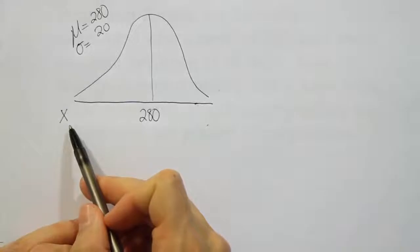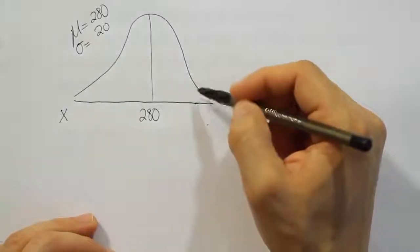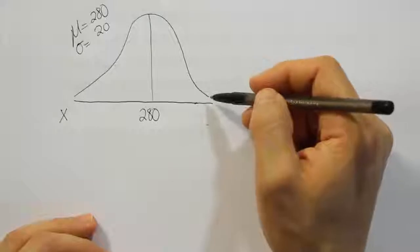This X represents a pregnancy length. And they say what's the pregnancy length that corresponds to the shortest 1% of pregnancies. Now if you think about over on this end, this would be the longest 1%, right?